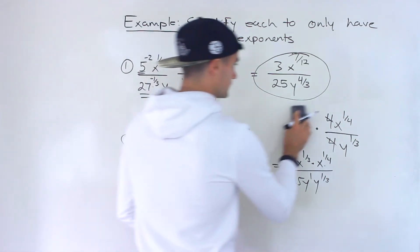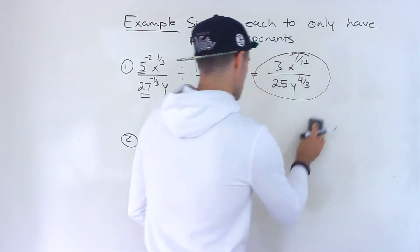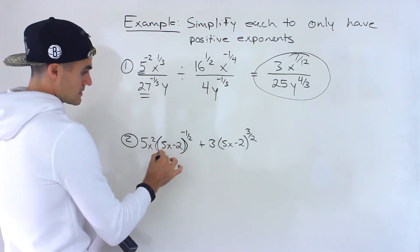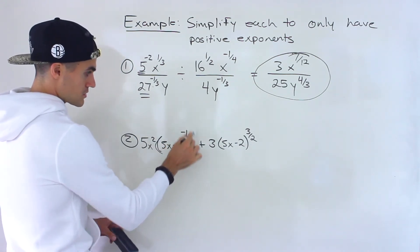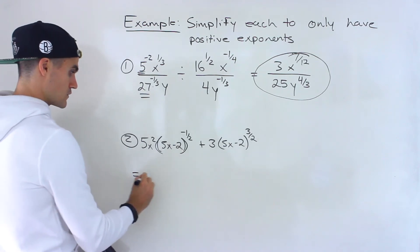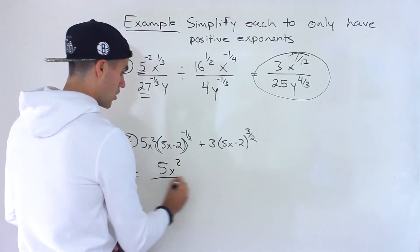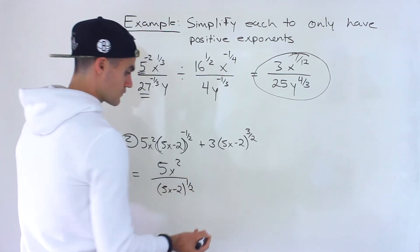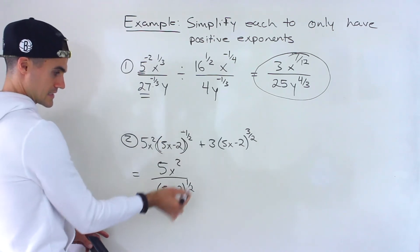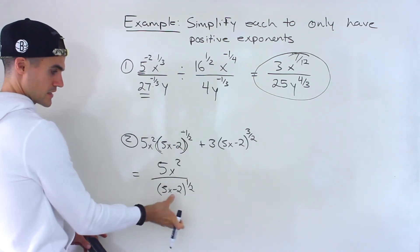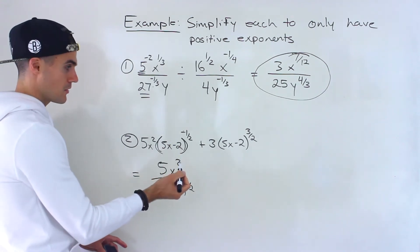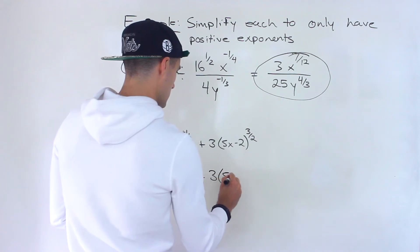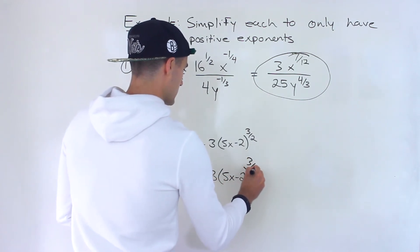Moving on to number 2. This one is going to be a little bit different, because we're taking an expression in brackets that has multiple terms to the power of negative 1 half. So what I'm going to do is first rewrite this as 5x squared over 5x minus 2 to the power of positive 1 half — bring this term down to the denominator and change the exponent to be positive. Over here I can't really do much, so let's just keep it as is.